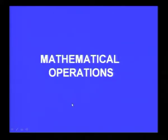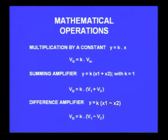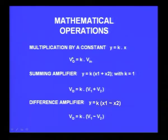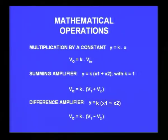We will continue our discussion on the mathematical operations. You may recall that multiplication by a constant is basically a very simple voltage amplifier: V output is some K times V input, where K is a constant which we call the gain. This is a very simple amplifier — it is performing a mathematical operation, namely multiplying a given input with a constant value. You also saw how we can perform addition of two voltages using an operational amplifier.